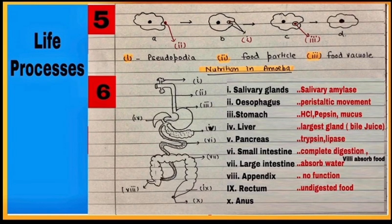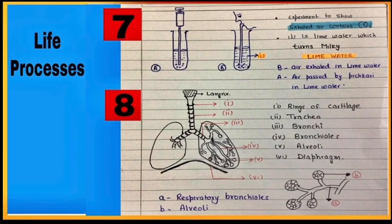Diagram 7 is an experiment showing that exhaled air contains carbon dioxide, and this carbon dioxide turns lime water milky. Diagram 8 is of human respiratory system.